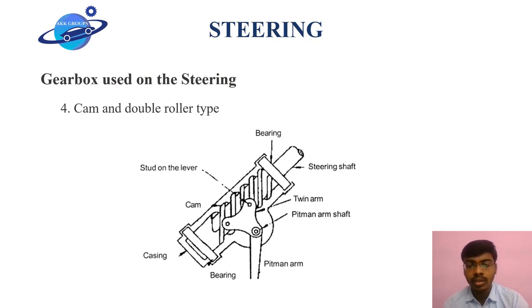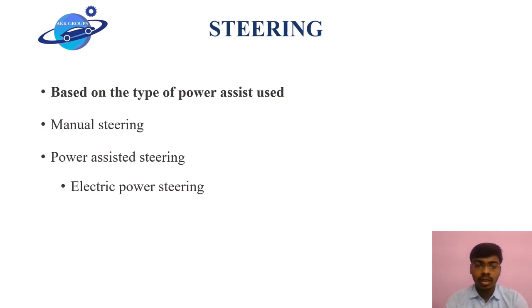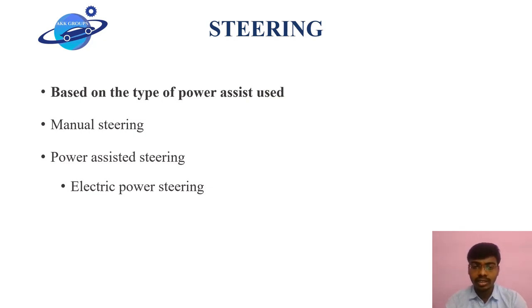Now we look at the types of power-assisted steering. There are two types: manual steering and electrical power steering. In manual steering, the rack and pinion type is generally used. Manual steering has a long life, uses a very easy design, requires very little maintenance, and is cheaper in cost.